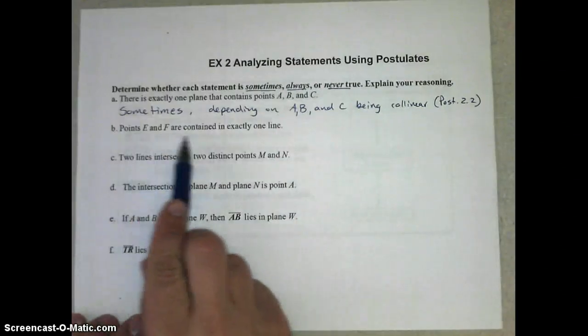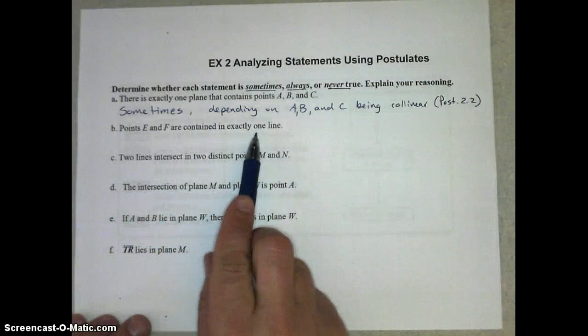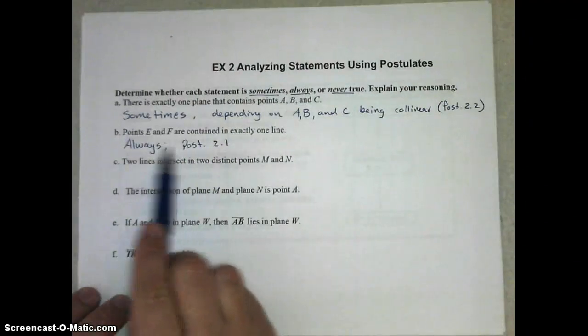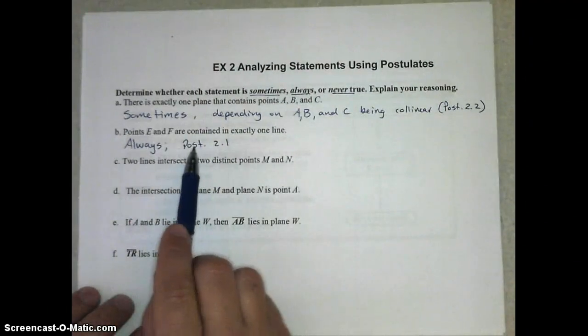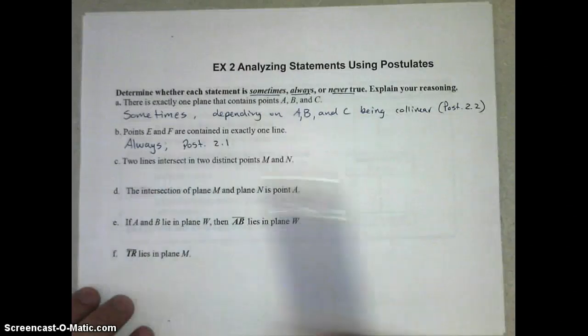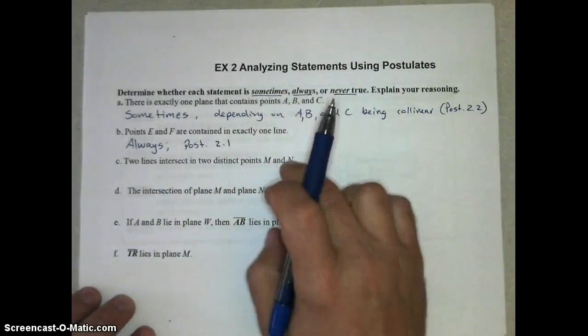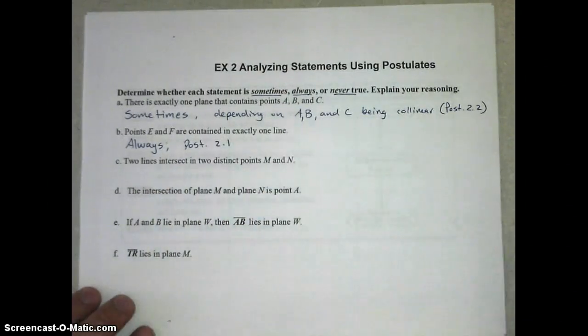Next, points E and F are contained in exactly one line. This is always true because of postulate 2.1. Through any two points, there's exactly one line. Why don't you try C through F on your own, and then when you are ready, you can continue watching the video to check your answers.